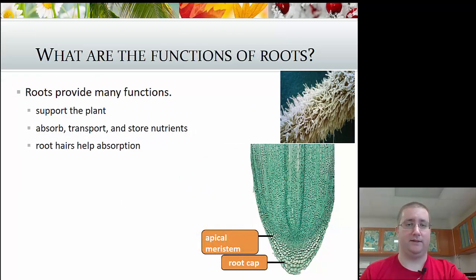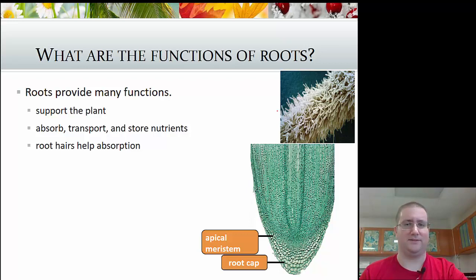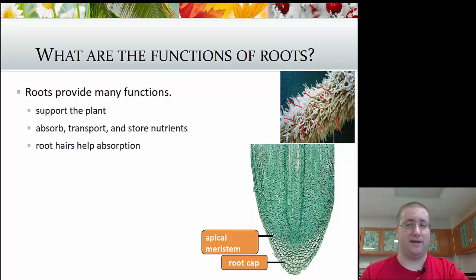The last part of this video deals with three of the four plant organs: roots, stems, and leaves. The functions of roots are support — anchoring the plant so it doesn't fall over or blow away — and absorption of nutrients and water from the soil. Looking at the picture, you can see little root hairs that come off to increase surface area for absorption. The more surface area sticking out, the more water and nutrients the plant can absorb.